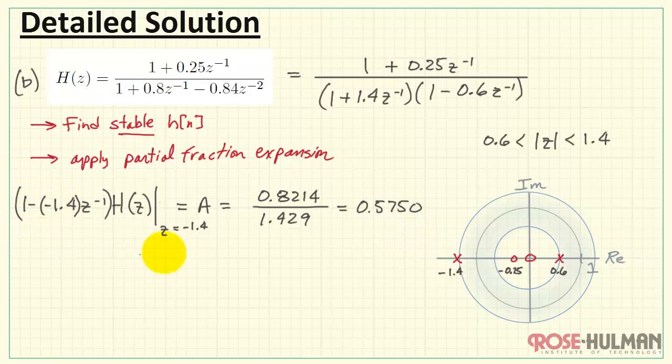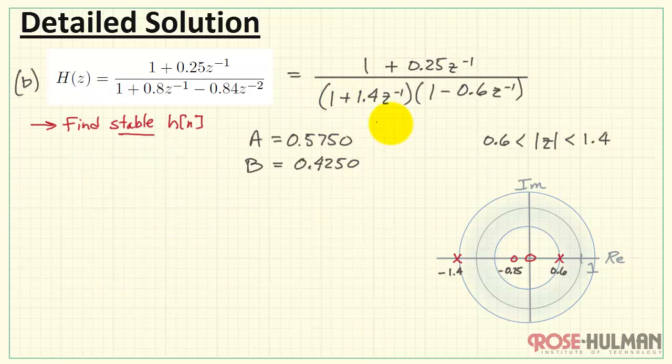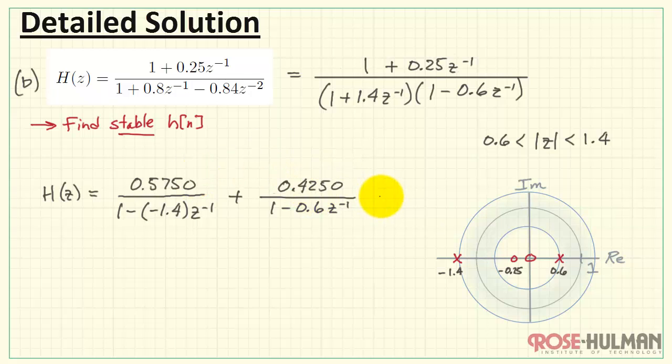And we have a is 0.5750. I'm going to apply the same general method to find b. Now, in this case, I'm multiplying by the other denominator term. And I would be keeping this one. We then evaluate that at z equals 0.6. I'm going to cut right to the chase on that. We have b equals 0.4250. Alright, partial fraction expansion now leaves us with this form. I can drop in the specific values for a and b.